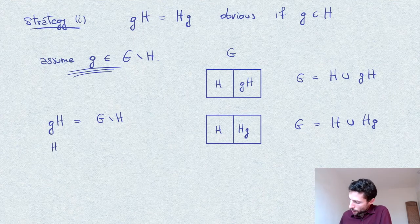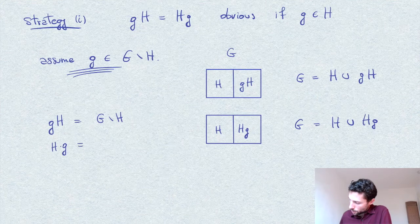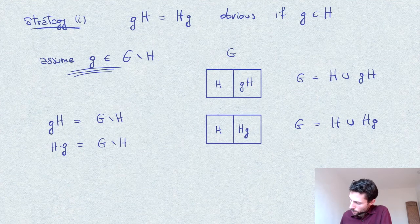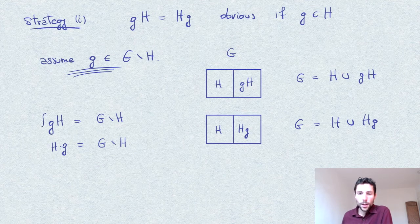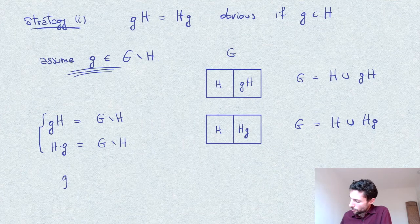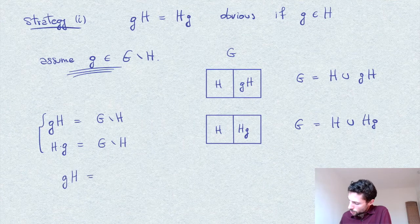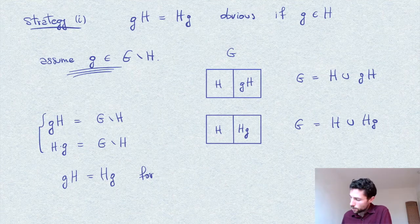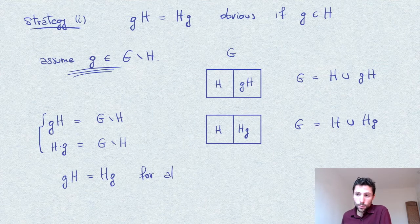And therefore we have that Hg is equal to G minus H. And now we are done. By these two, it follows that gH is equal to Hg also for all, well, for all g not in H. But we already showed it for g in H, and therefore for all g's.